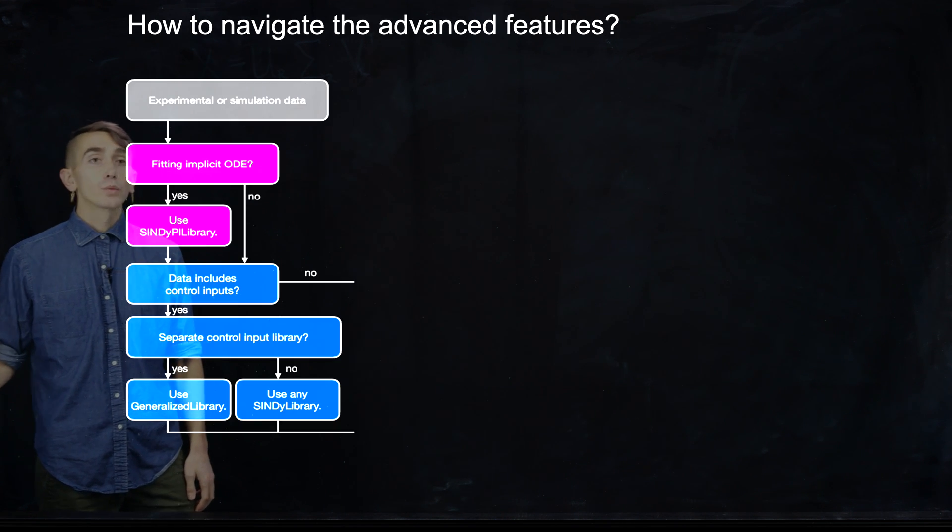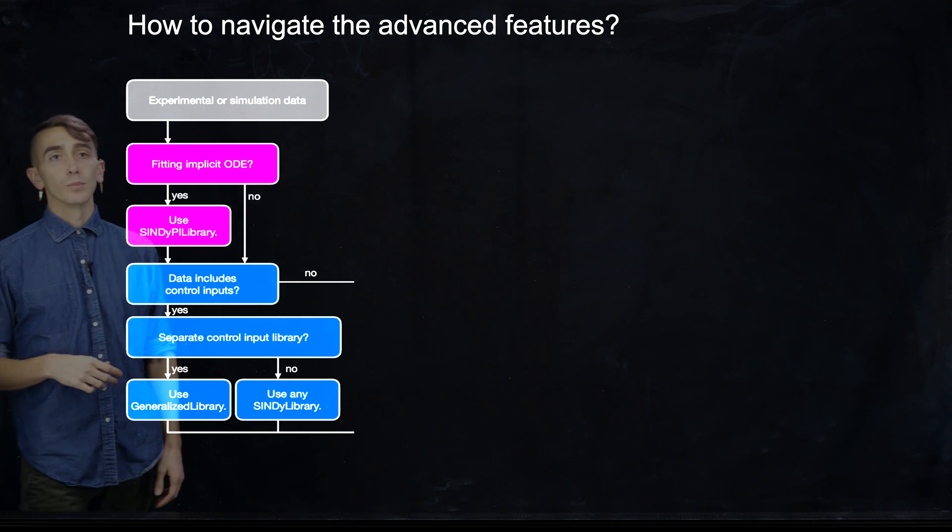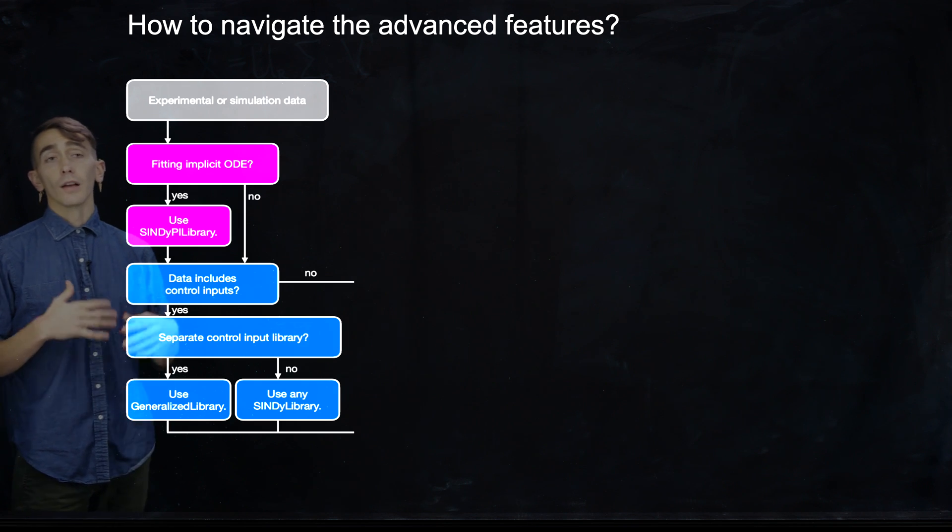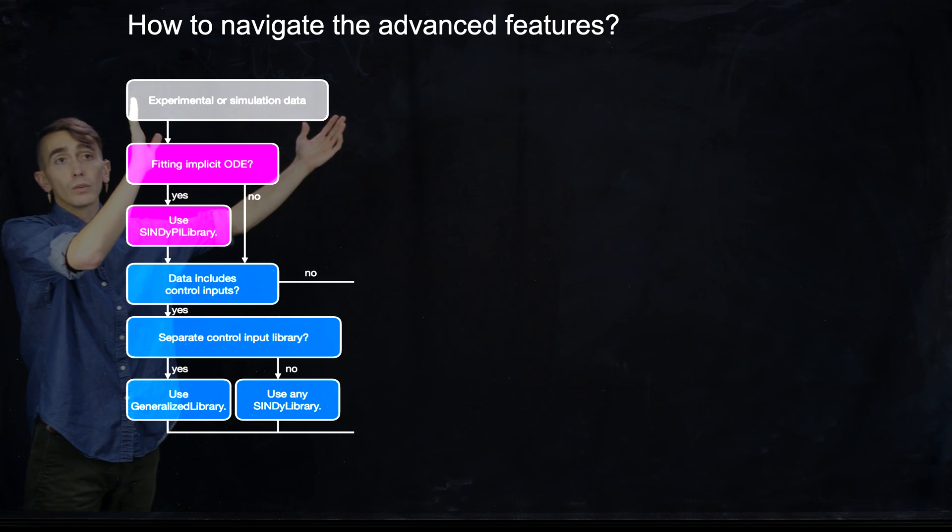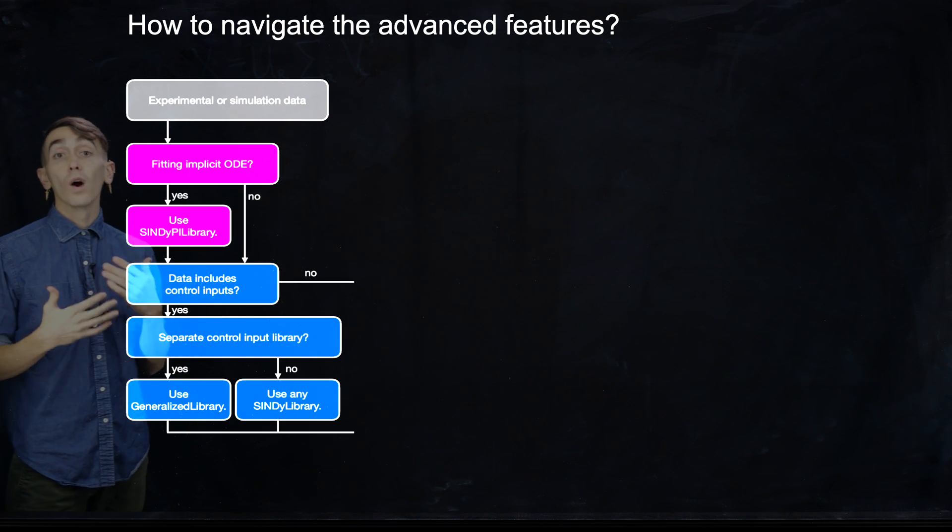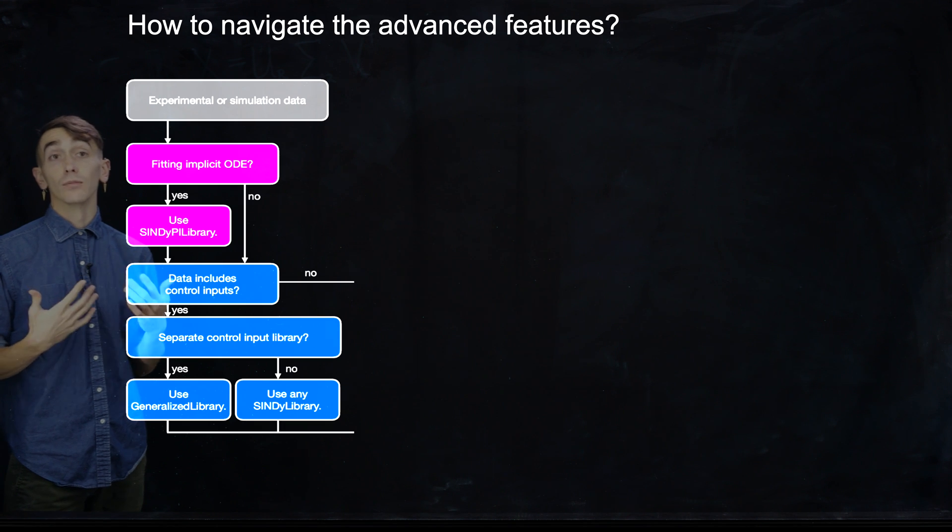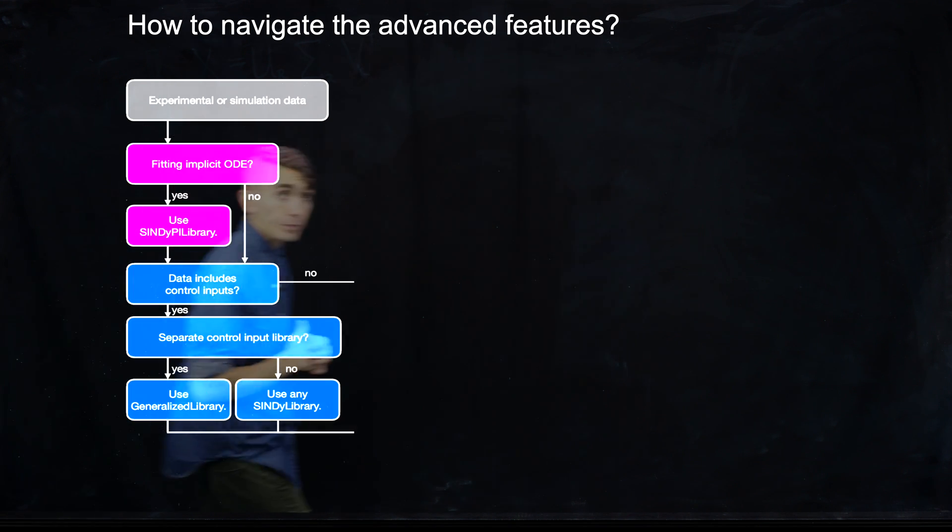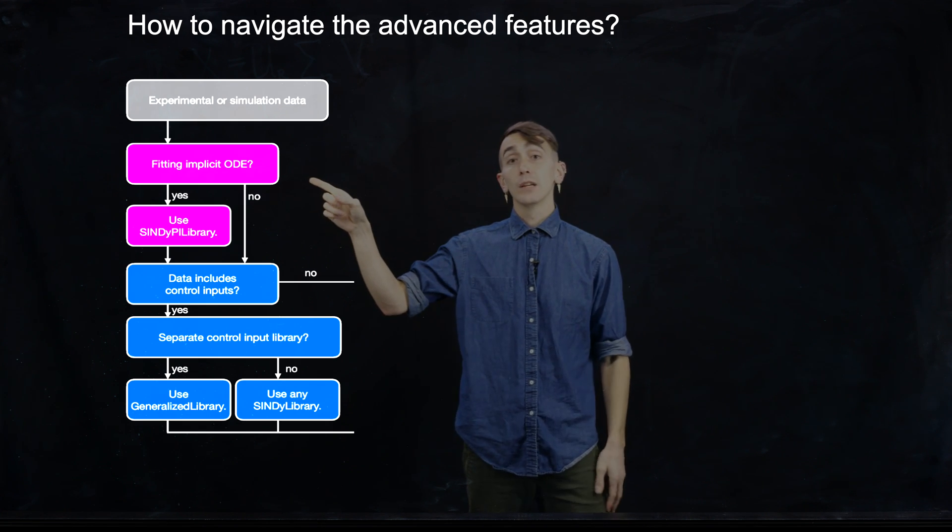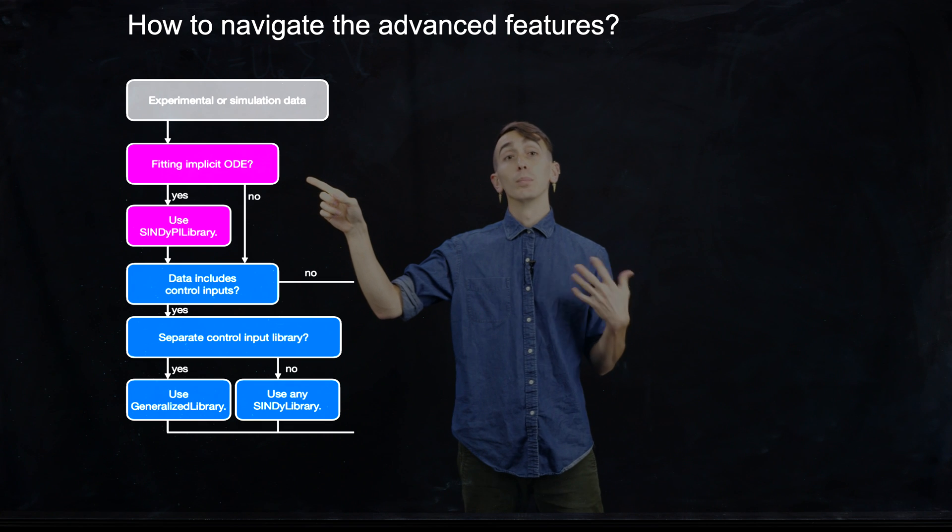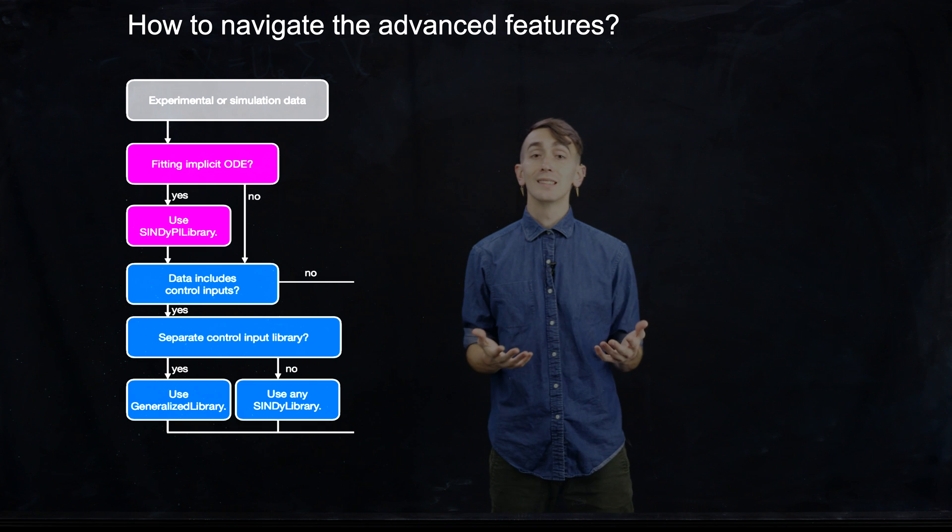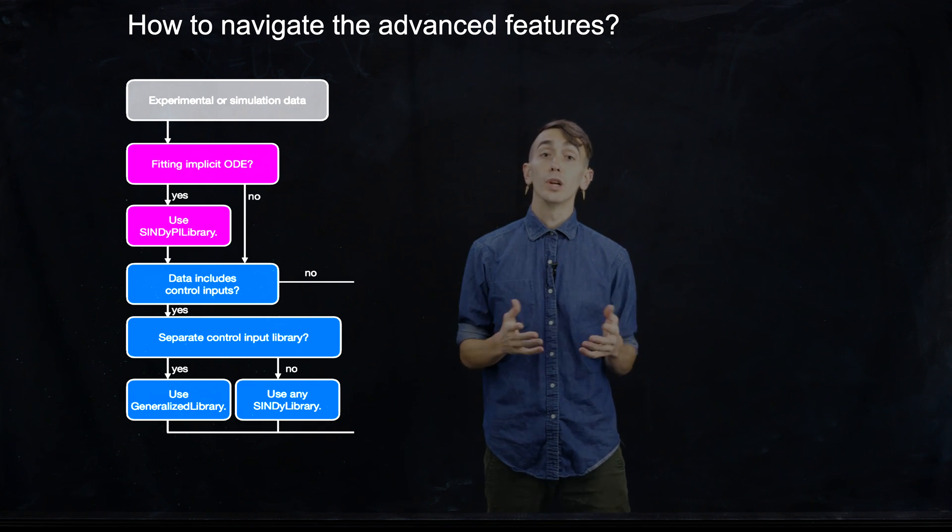And then I just wanted to show this last flowchart here about how to navigate some of the advanced features in PySINDy. And what I'm going to show is basically starting from whatever experimental or simulation data you have, how you can make a series of decisions to figure out what functionality in the PySINDy code is right for your data. So one of the first things you might ask is, do I expect my dynamics to follow a system of implicit ODEs? If that's the case, you have little option. You have to use the SINDyPI library and associated SINDyPI optimizer.